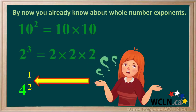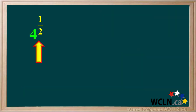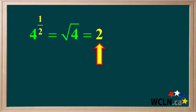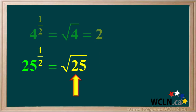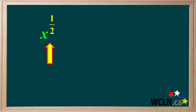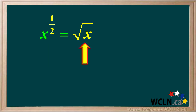But what in the world does 4 to the power 1 half mean? It turns out that 4 to the power 1 half means the square root of 4, which is equal to 2. Similarly, 25 to the power 1 half is equal to the square root of 25, which is equal to 5. We can generalize: x to the power 1 half is just equal to the square root of x, where x can stand for any positive number.